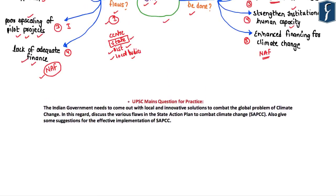A practice Mains question based on this analysis: 'The Indian government needs to come out with local and innovative solutions to combat the global problem of climate change. In this regard, discuss the various flaws in the State Action Plan to combat climate change and give suggestions for their effective implementation.'